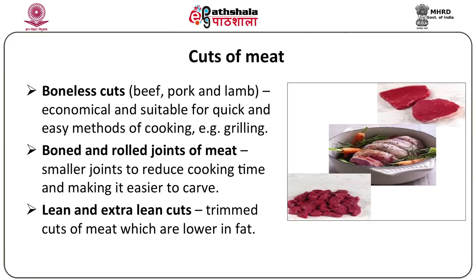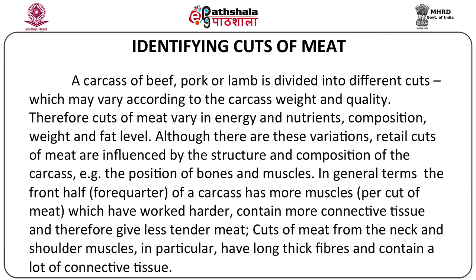Boneless cuts of beef, pork, and lamb are economical and suitable for quick and easy cooking methods like grilling. Boned and rolled joints are smaller joints which help to reduce cooking time and make carving easier. Lean and extra lean cuts have the fat trimmed off, so they are usually lower in fat. A carcass of beef, pork, or lamb is divided into different cuts that may vary according to carcass weight and quality, and therefore cuts vary in energy, nutrients, composition, weight, and fat level. Retail cuts of meat are influenced by the structure and composition of the carcass.